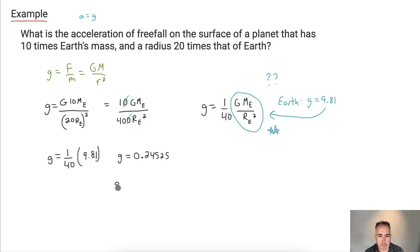So we'll just do this to two significant figures. So g is approximately equal to 0.25. And this would be meters per second squared. Because that's still the acceleration of free fall, the acceleration due to gravity, or calling it the gravitational field strength. Same, same.